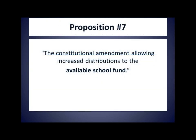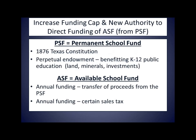On to Proposition 7: 'The Constitutional Amendment allowing increased distributions to the available school fund.' The Permanent School Fund, or PSF, is a perpetual endowment for public schools set up in the 1876 Texas Constitution. It consists of state-owned assets in the form of land, minerals, and investments from the sale of these items. Annually, proceeds are moved from the PSF to the Available School Fund, or ASF, to be appropriated by the legislature for government education. The ASF is also funded through a variety of sales taxes. This proposed amendment deals with increasing the amount of funds transferred from the PSF into the ASF and also expands who can direct those revenues.